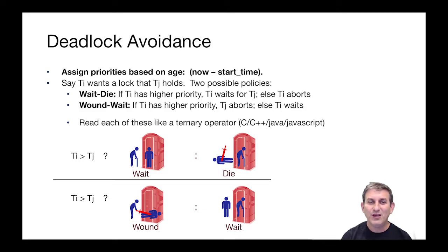Let's go through both of them using the illustrative example of a port-a-potty, with two transactions TI and TJ. The wait-die protocol works like this: if TI has higher priority — meaning TI is older than TJ — and TI wants the lock, it wants to get in the port-a-potty, then TI waits for TJ. But if TI has lower priority than TJ, meaning the young person is outside and the older person is in the port-a-potty, then TI aborts itself. That's the wait-die protocol shown in the first row of pictures.